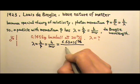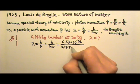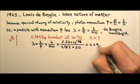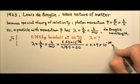And then divide by the mass, 0.145 times the speed 20, and this will give me 2.29 times 10 to the negative 34th meter.